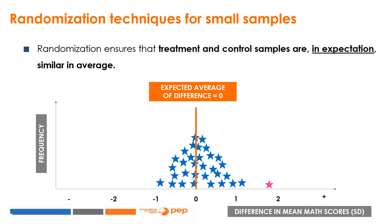Randomisation ensures that treatment and control samples are similar on average in expectation — meaning characteristics will be balanced across many draws of the allocation. Imagine randomising pupils into treatment and control groups for an educational intervention. A single random draw allows us to expect a zero difference on average in mean pre-treatment math scores between groups. However, in any particular random allocation the two groups can differ, and the probability that such differences are large falls with sample size.